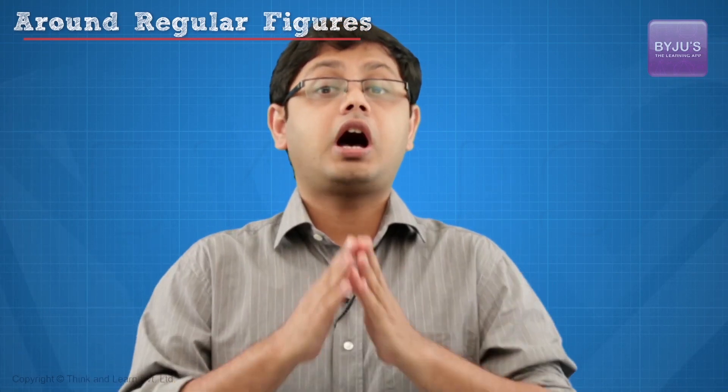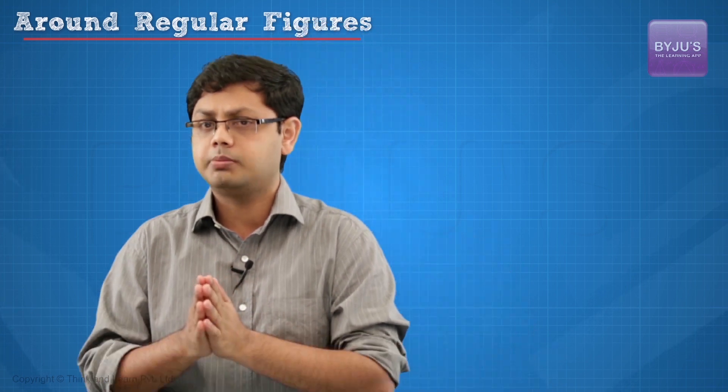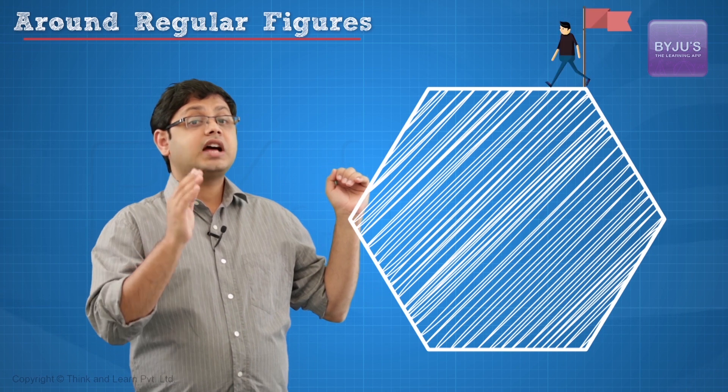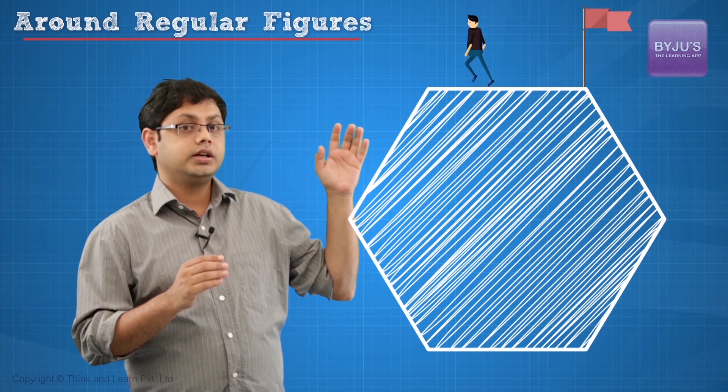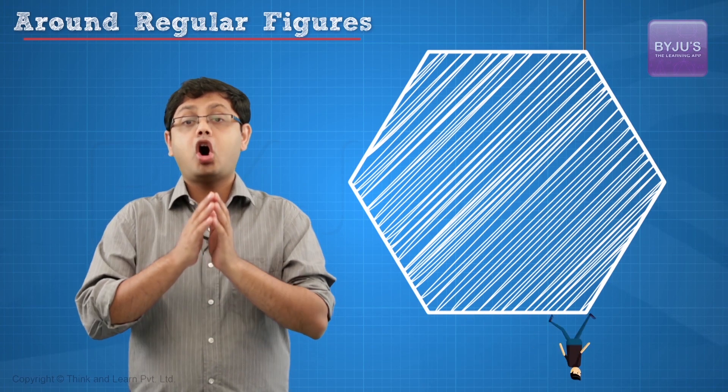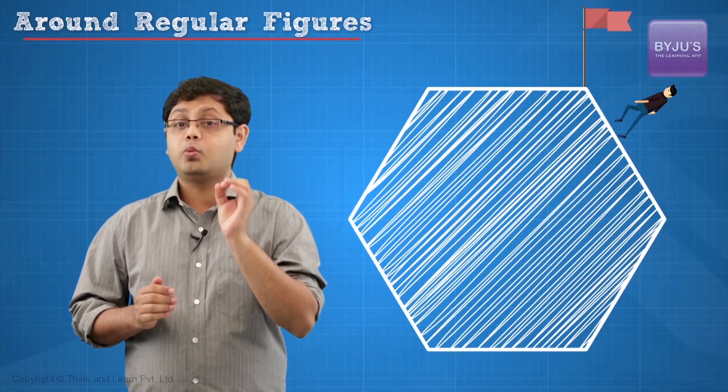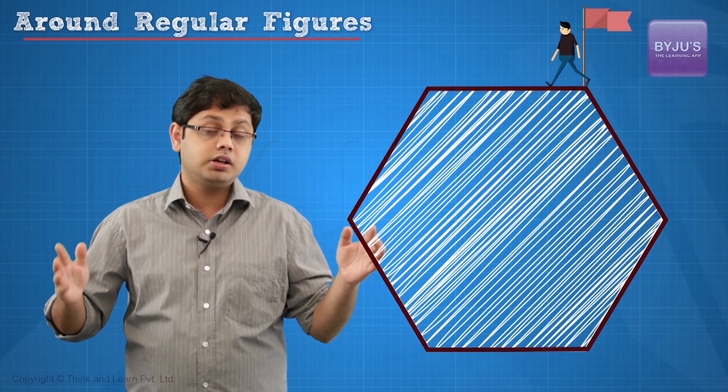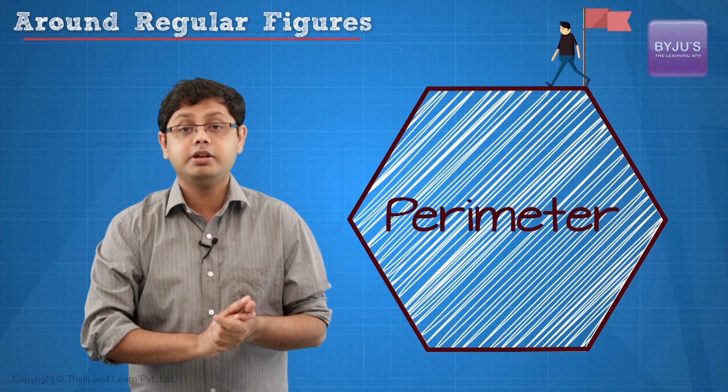A good way to visualize what perimeter is, is to imagine that you can walk along the boundary of that shape. Take for example, this six-sided polygon. Imagine starting at one point on the polygon and then walking along each side until you come all the way back to the point where you started from. Mark the total distance that you traveled and that would be the perimeter of this polygon.